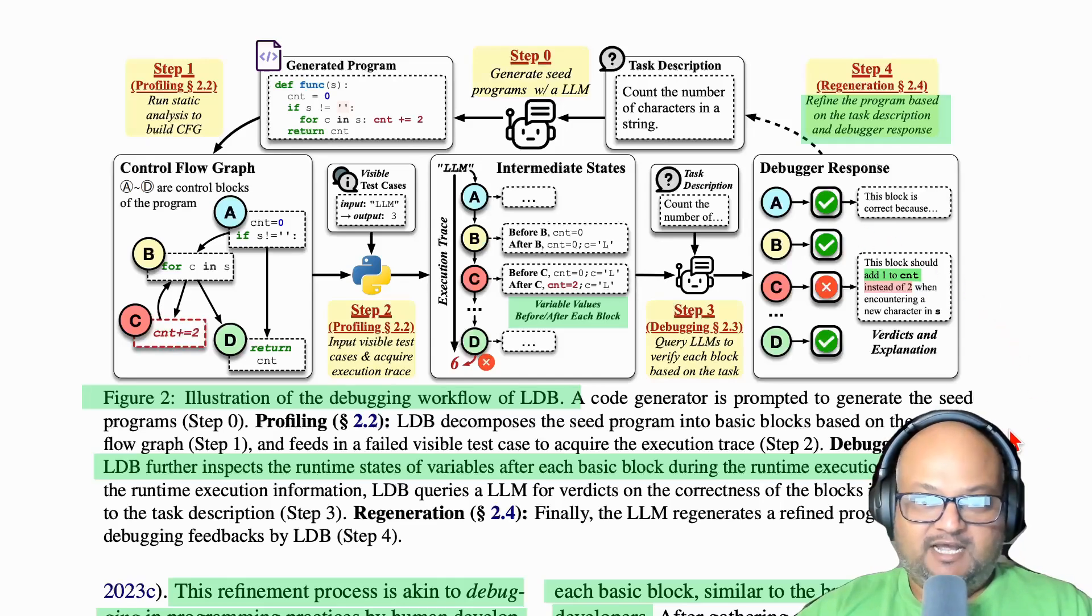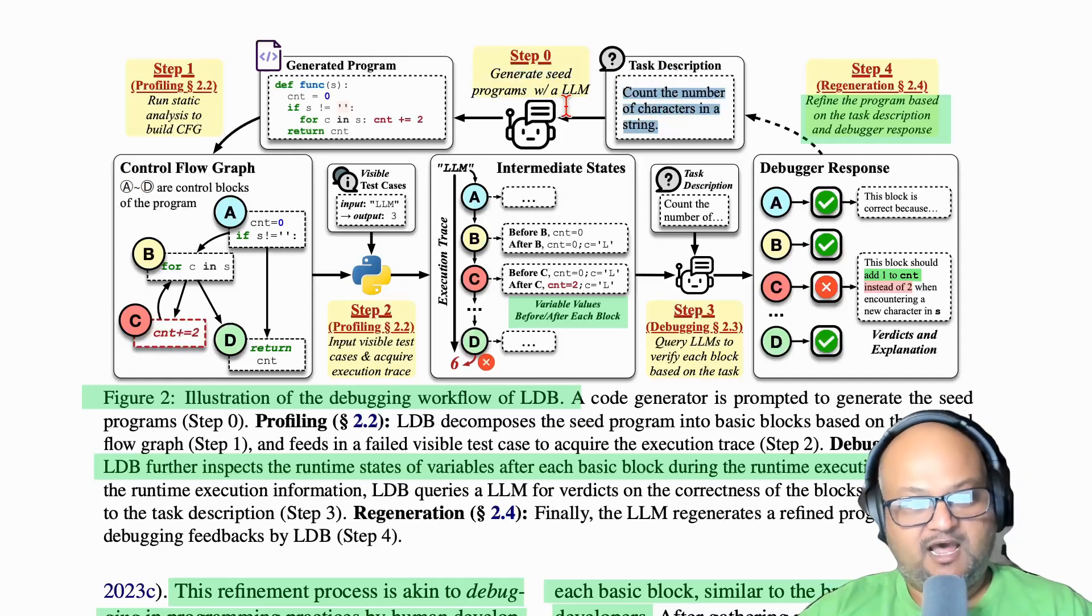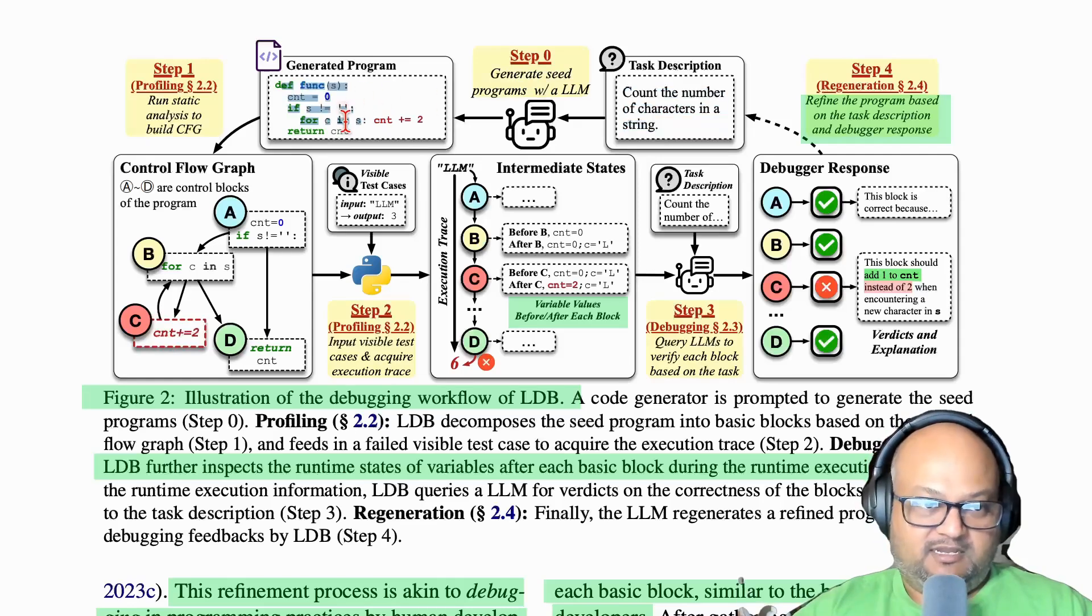That is exactly the process that the authors are trying to mimic here, but by using prompts with an LLM. This diagram shows an overall sketch of the process. You start with step zero, where you give the LLM an English language task description and ask it to generate some code to accomplish that, which gives you some initial code.